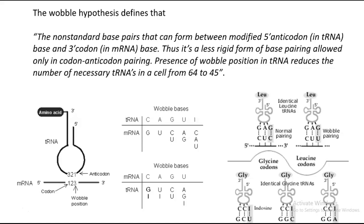The presence of a Wobble position in the tRNA molecule, at the 5' end of the anticodon, reduces the number of necessary tRNAs required in a cell from 64 to 45. For example, two cases are narrated here: one is the leucine-related Wobble bases and their respective mRNA recognition, and another is the glycine-related Wobble bases and their respective tRNA recognition.